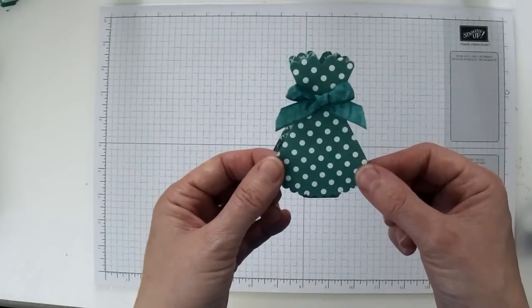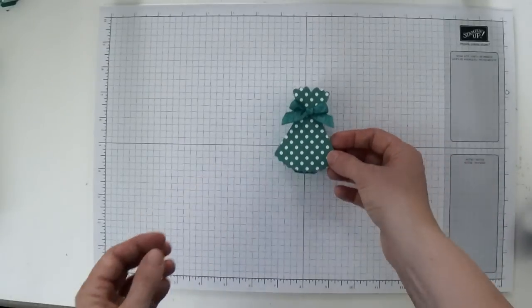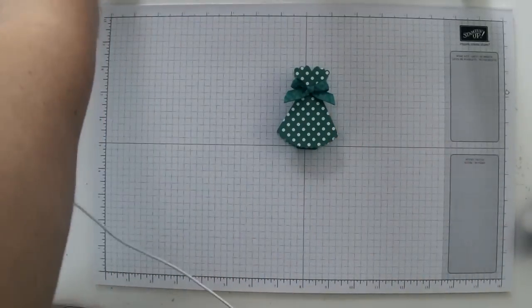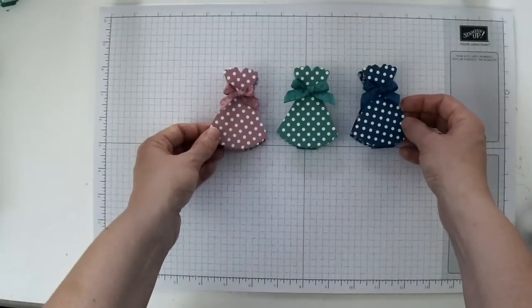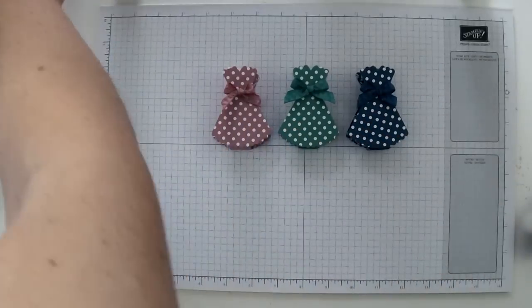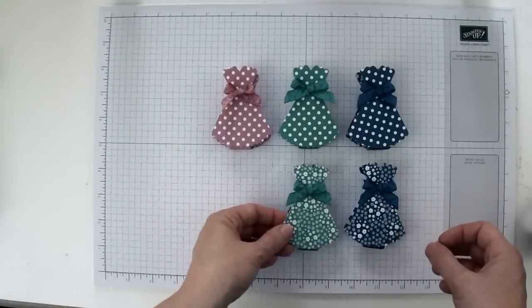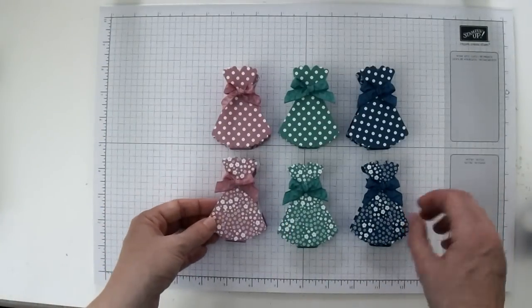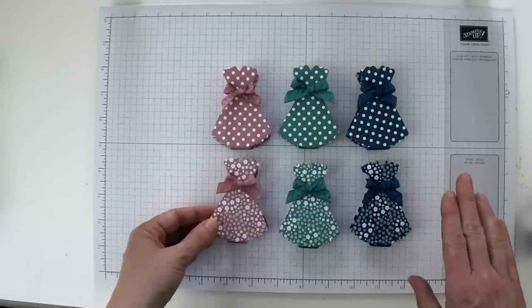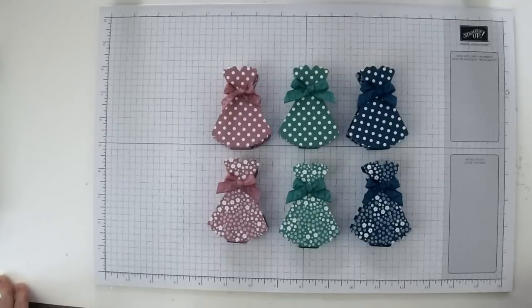So I just want to show you all how they all look together. I think it would look fabulous if you did them in all the in colors. I've just done them in three. But then I also did them with a different pattern of paper. And I think it looks just as cute with this floral paper that comes with the in color paper stack as it does with the polka dots. So aren't those just absolutely adorable?